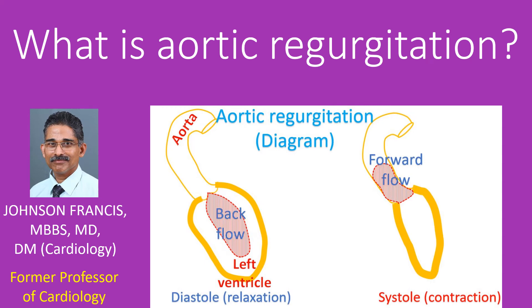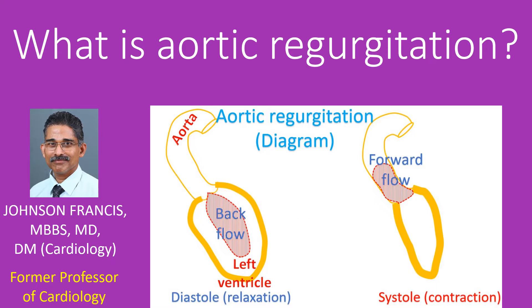Aortic regurgitation is leakage in the aortic valve which separates the aorta from the left ventricle. The aorta is the largest blood vessel into which the left ventricle, the left sided muscular chamber of the heart, pumps blood. The normal function of the aortic valve is to prevent backflow of blood from the aorta to the left ventricle.